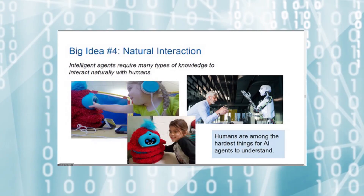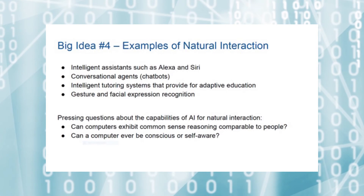The fourth big idea is natural interaction. Intelligent agents require many types of knowledge to interact naturally with humans. One important area of big idea number four is natural language understanding. Human language is very rich but filled with ambiguity. It may contain imagery, humor, or sarcasm. Understanding what people are talking about is challenging for computers. Another topic in big idea number four is human emotion — this includes understanding when a person might be happy, sad, or frustrated, and recognizing emotional states from cues such as tone of voice, facial expression, and body language.